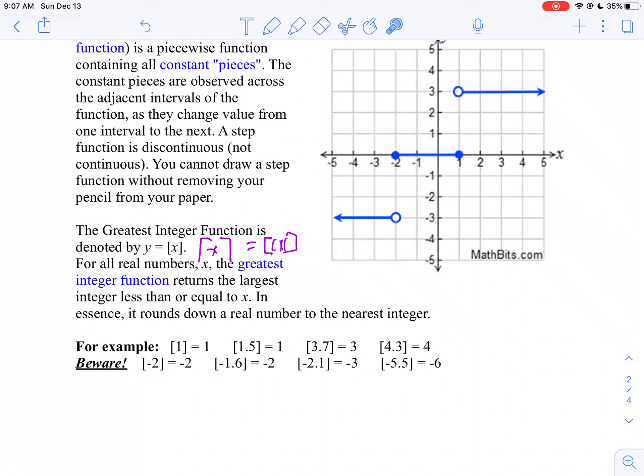So that, for example, if your number is 1.5, if you do the greatest integer function, what's the biggest number less than or equal to 1.5? Well, it's 1.